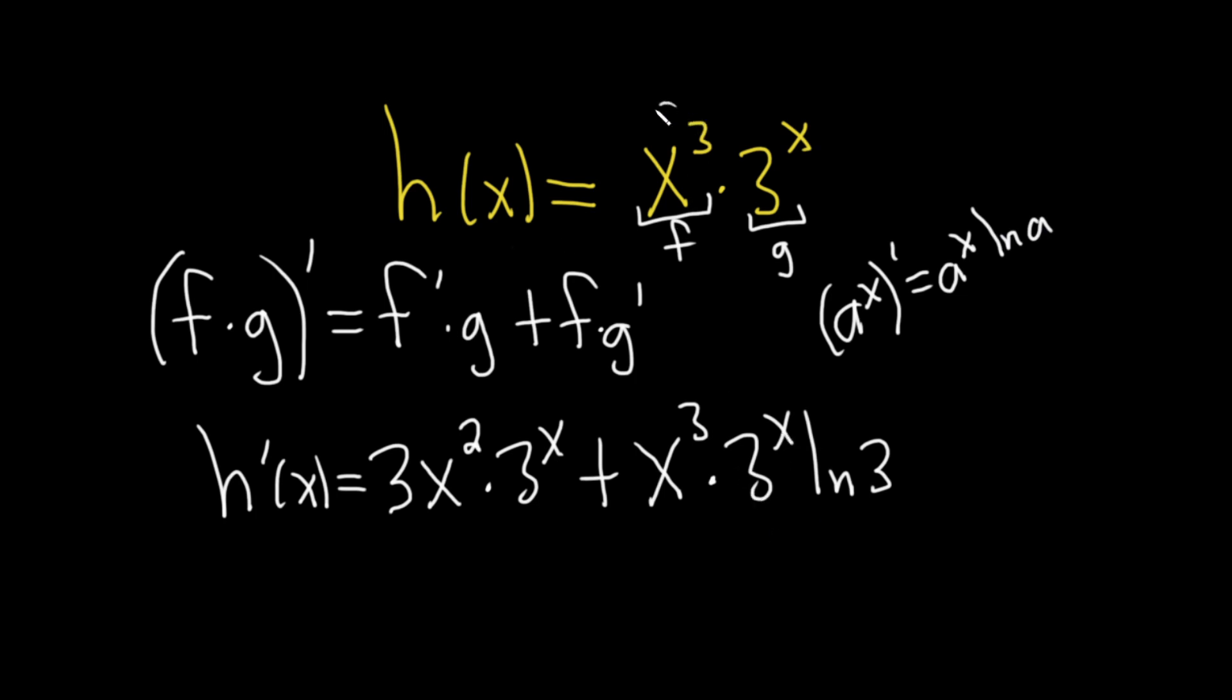Let's check our work. It's the derivative of the first, so 3x squared, times the second, plus the first, times the derivative of 3 to the x, which is simply 3 to the x, ln 3. And so that would be the derivative of h of x.